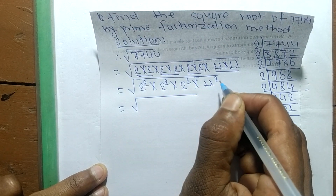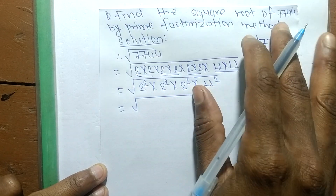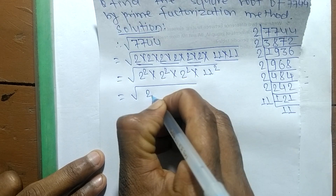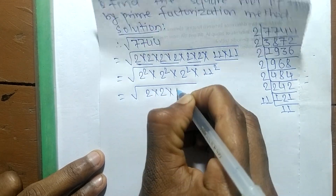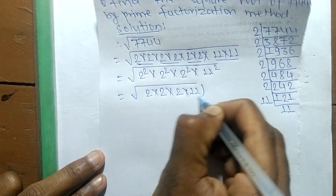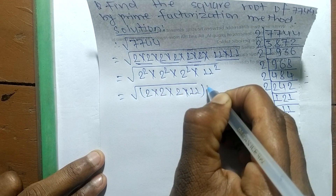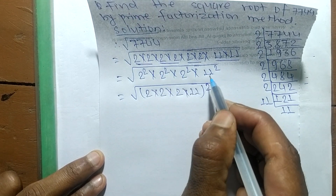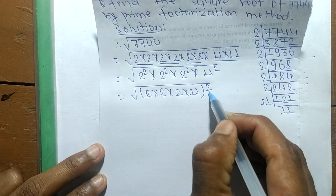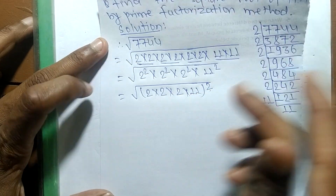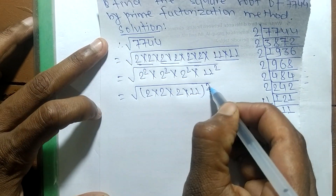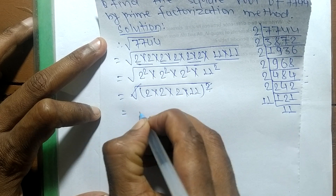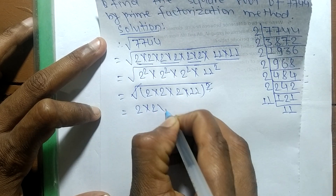A square is present in all these numbers, therefore we take the square as common. We can write (2 × 2 × 2 × 11) whole squared. Taking the square root, the square and the square root cancel each other out.